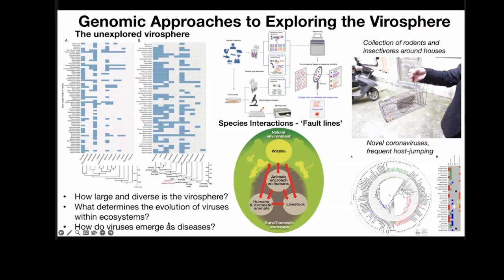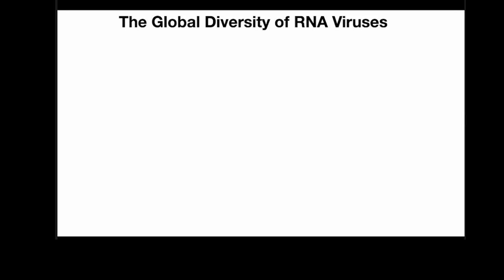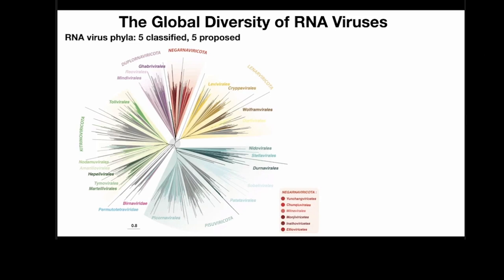The first question is how large and how diverse is the virus sphere? Lots of people are now doing viral sequencing of every environment and species, and what you end up with are very large virus phylogenies. RNA viruses are classified into five phyla, with five more proposed. The scale bar here represents amino acid changes per site — these are very, very divergent things. Between different groups, every site has been hit by multiple mutations — they're extraordinarily divergent.